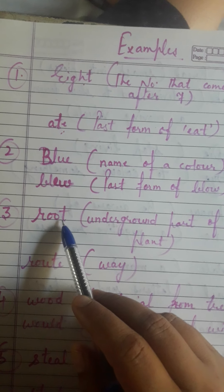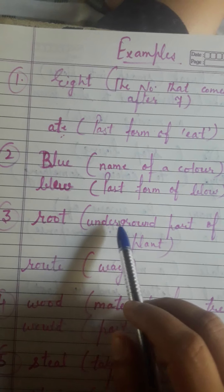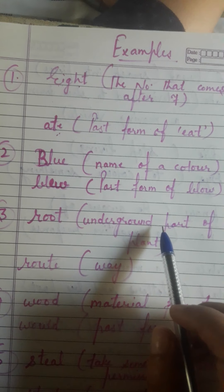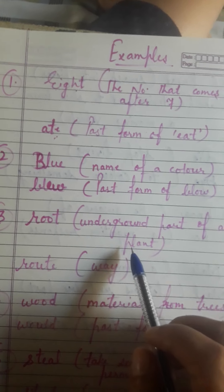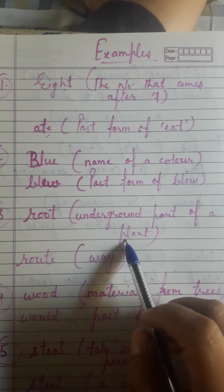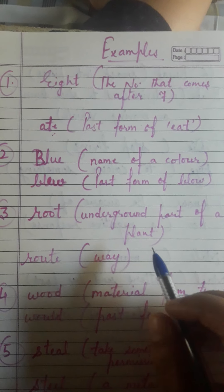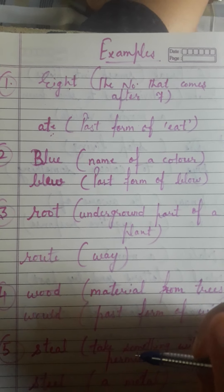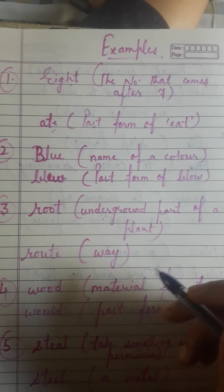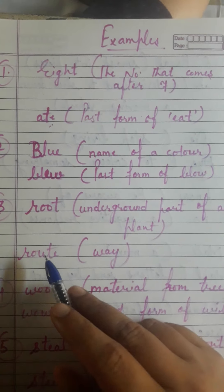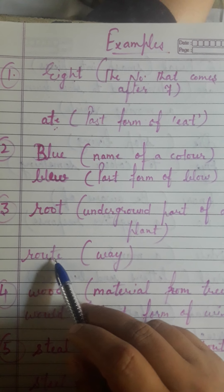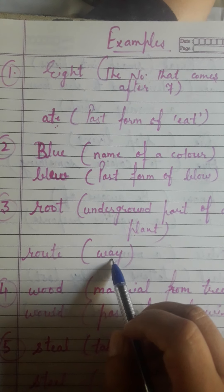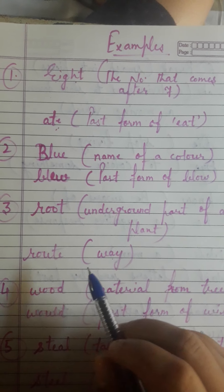Next is R-O-O-T, root — it is the underground part of a plant, means jo plant ka dharti ke niche wala hissa. And R-O-U-T-E, route — means rasta, a path or way.